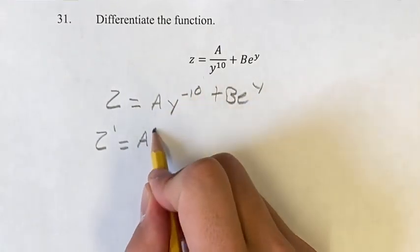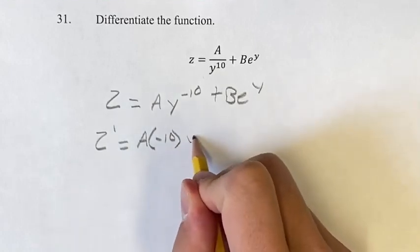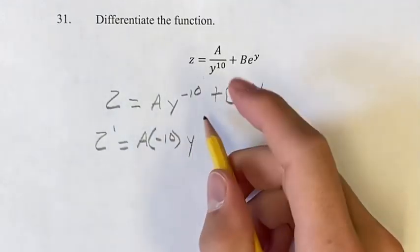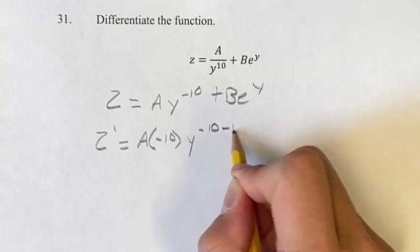Take your exponent, bring it down, multiply it by the coefficient. Then you have your new exponent, it's the old one minus 10 minus 1.